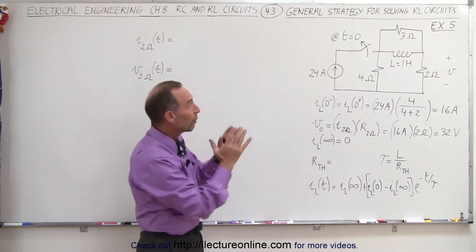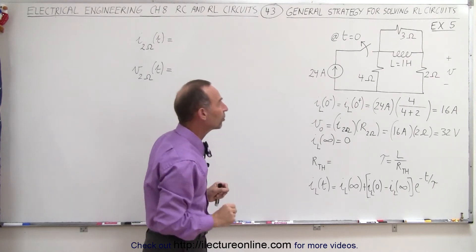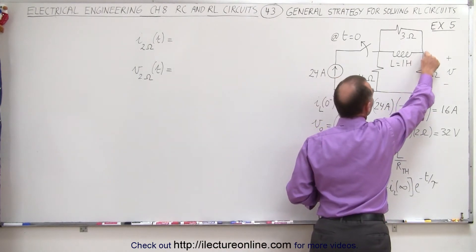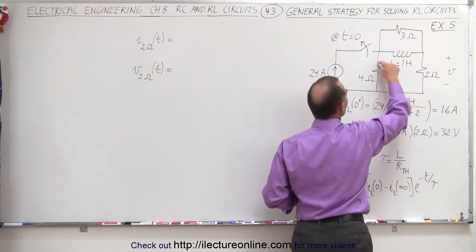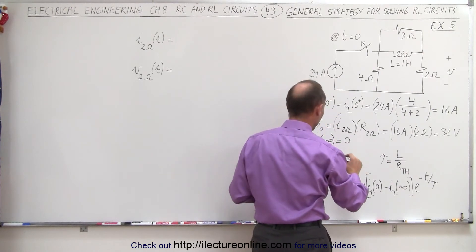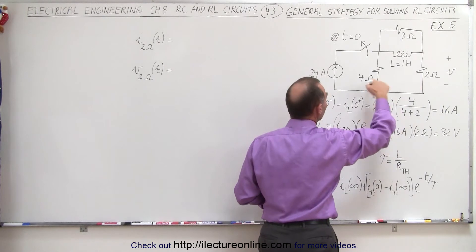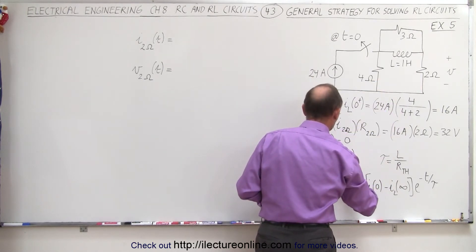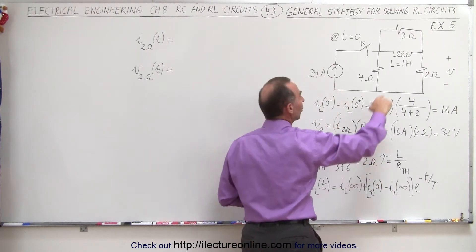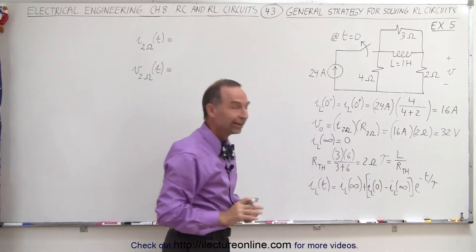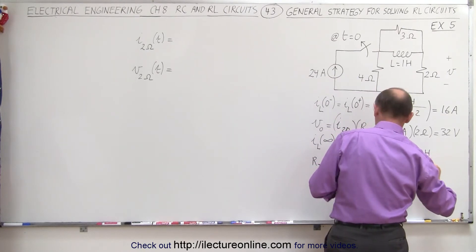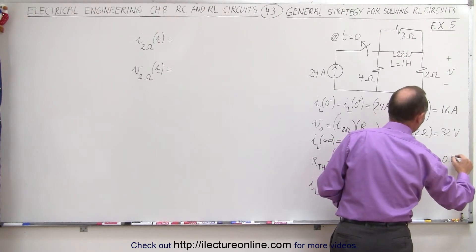Once the switch is open, we want to find the equivalent resistance of the remaining circuit affecting the inductor, so we're looking for the Thevenin resistance. Starting from one point of the inductor to get to the other point, either we go through this branch or we go through this branch — so we have two parallel branches. The resistance is the product over the sum: that's 3 ohms on one branch and 2 plus 4 or 6 ohms on the other, divided by 3 plus 6, so 18 divided by 9, which is 2 ohms of total resistance for the inductor after the switch opens up. Therefore the time constant is the inductance — which in this case is 1 henry — divided by 2 ohms, which is equal to 0.5 seconds.